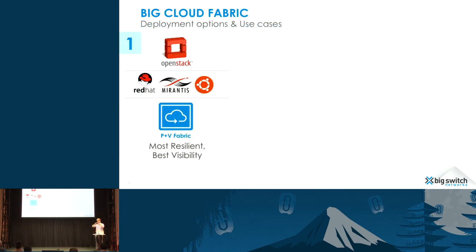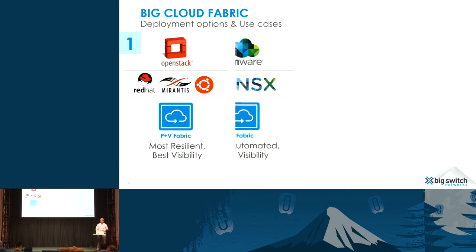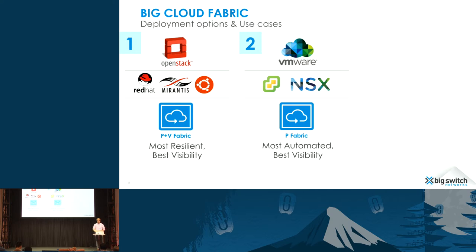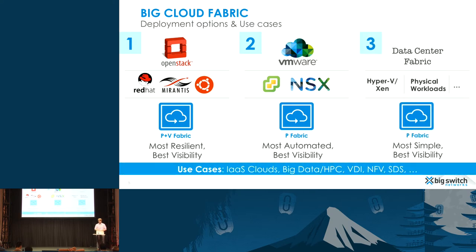With our data center switch equivalent, our Big Cloud Fabric, our main use case — not surprising because we're here — is actually OpenStack. We provide OpenStack plugins to manage our network: we have a Neutron plugin. We also have VMware integration, and we also integrate with other forms of control software including Hadoop and Hyper-V. But for purposes today, I'm going to focus on the OpenStack bits.